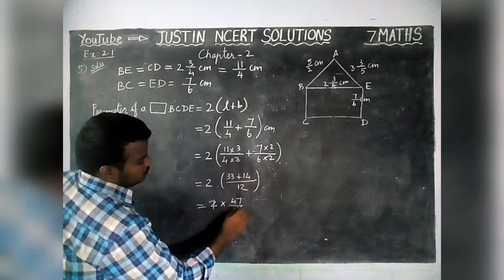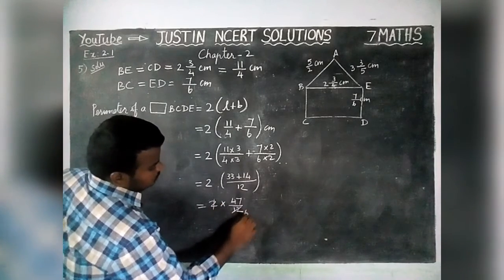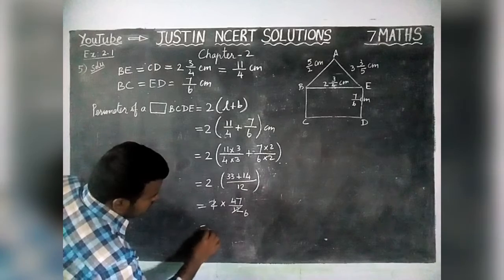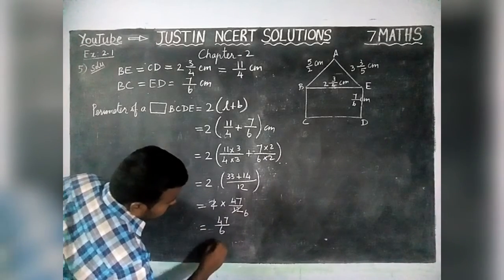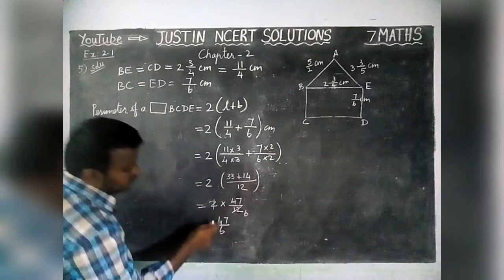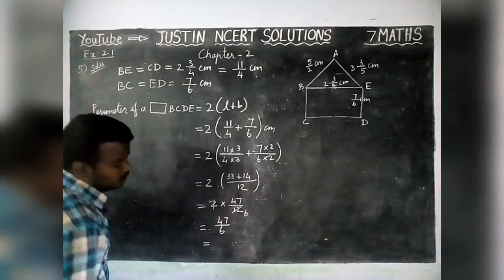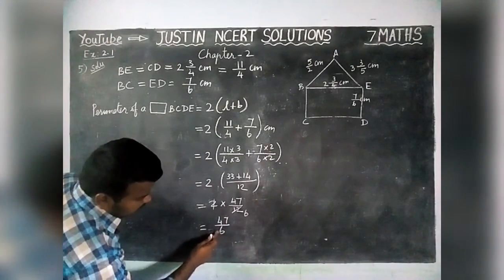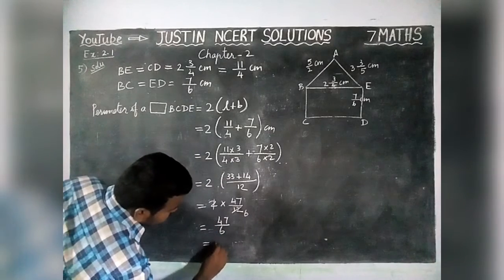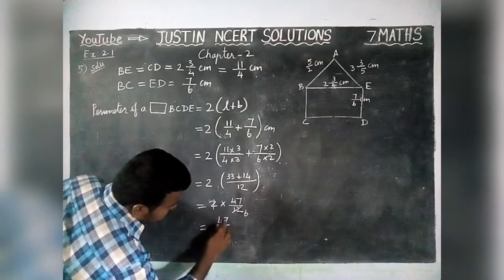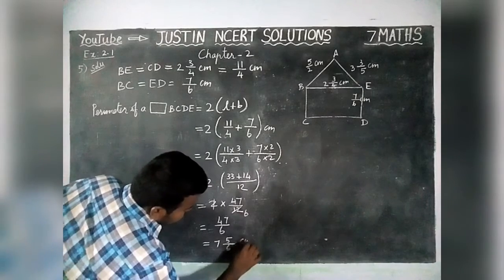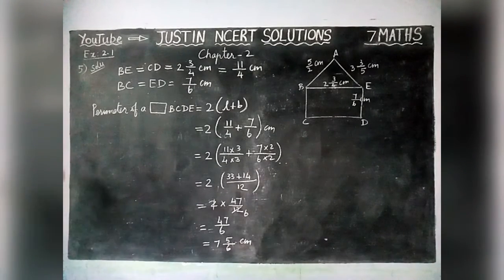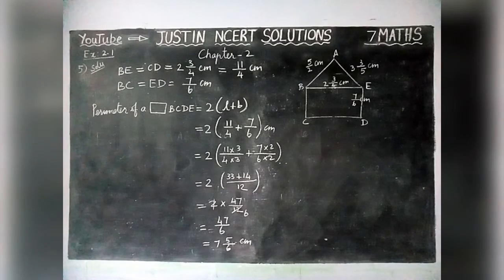Simplifying 2 × 47/12: 2/12 reduces to 1/6, giving 47/6. Converting to a mixed number: 6 goes into 47 seven times (6 × 7 = 42), with 5 remaining. So the perimeter of rectangle BCDE is 7 and 5/6 centimetre.